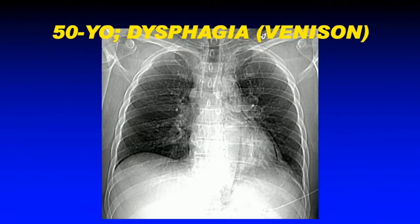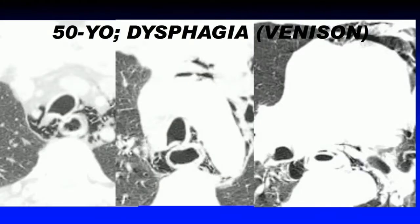Starting with esophageal trauma: this is a patient who came to the hospital after dinner and developed chest pain. He had a chest X-ray in the emergency room showing pneumomediastinum. On CT, the pneumomediastinum is fairly extensive, from the top to the bottom of the mediastinum. There is perhaps a little bit of wall thickening of the esophagus, but we didn't demonstrate any defects within the wall, partly because we just don't give oral contrast in these patients in the emergency room.